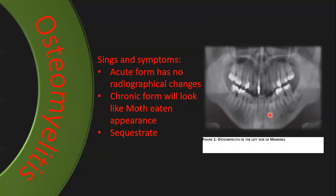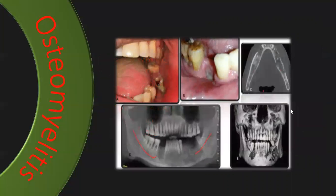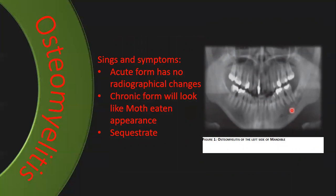Radiographical changes are only seen when we reach the chronic stage. In acute and subacute, we have no radiographical changes — only clinical features. In the chronic stage, we see what we call the moth-eaten appearance: radiolucent areas within the relatively radiopaque bone of the mandible. You can also see islands of bone floating in radiolucency — these are called sequestra, which are a good indicator of chronic osteomyelitis.